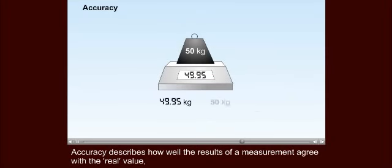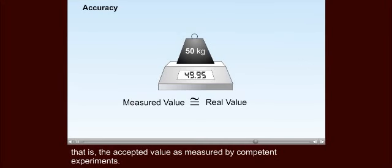Accuracy describes how well the results of a measurement agree with the real value. That is, the accepted value as measured by competent experiments.